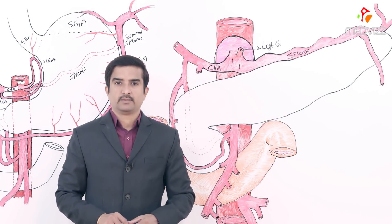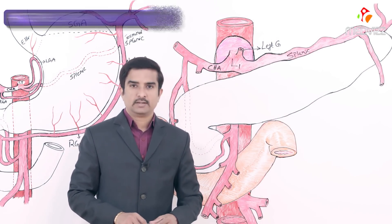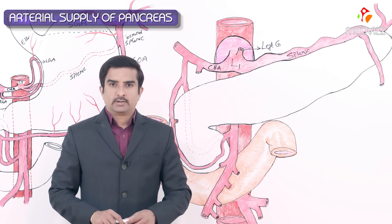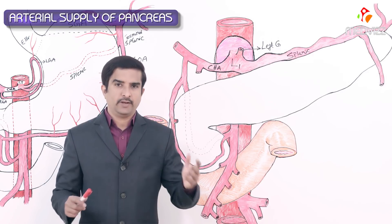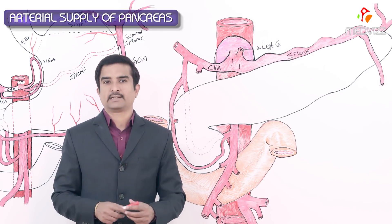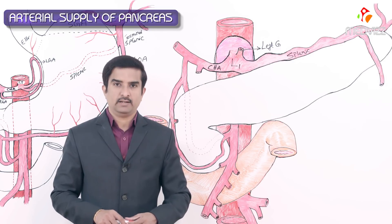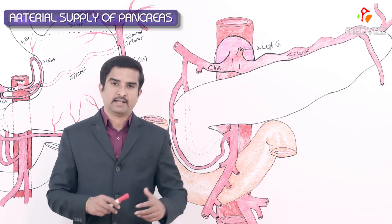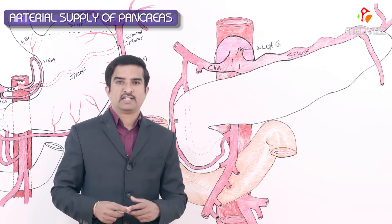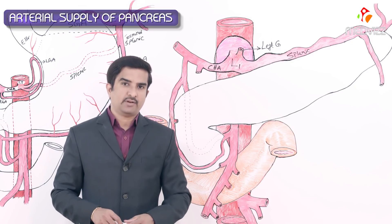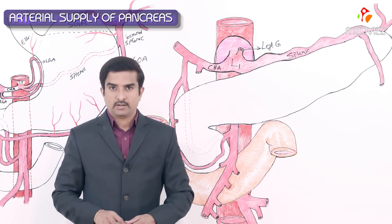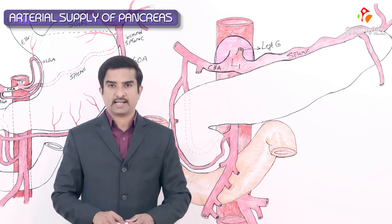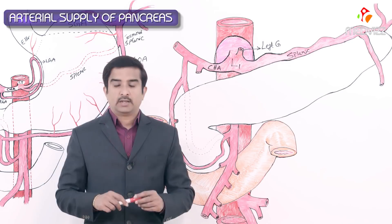Today's topic is the arterial supply of the pancreas, which is one of the most complicated topics in the overall vascular system of the abdomen because there are too many variations and every author describes a different version when discussing pancreatic arteries and their origins. For this lecture, we will stick to the 41st edition of Grey's Anatomy.